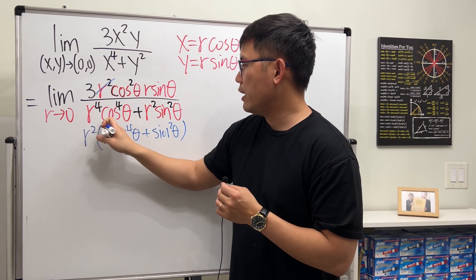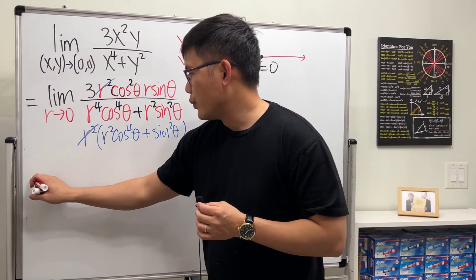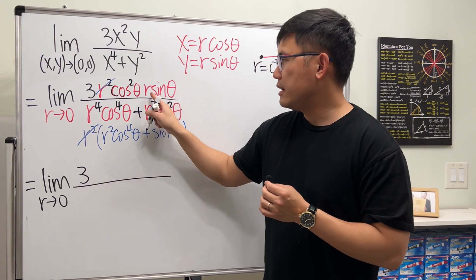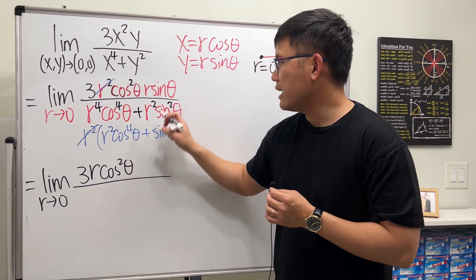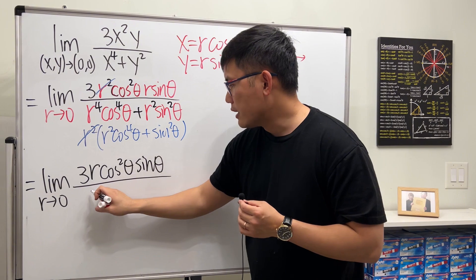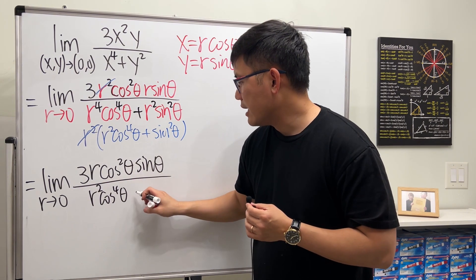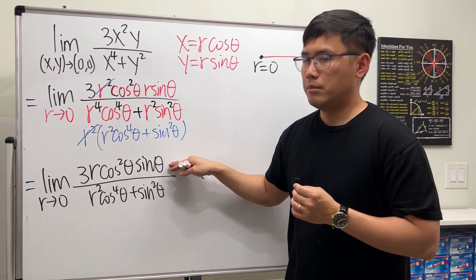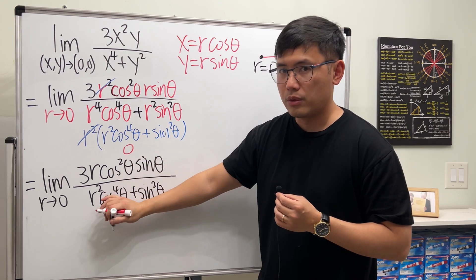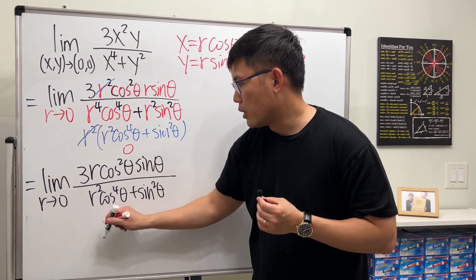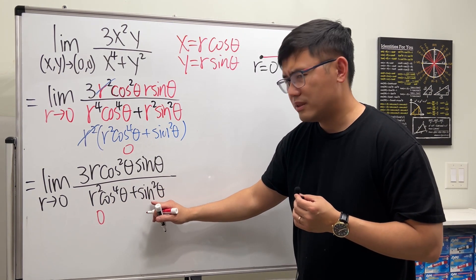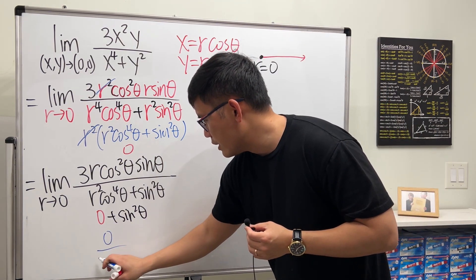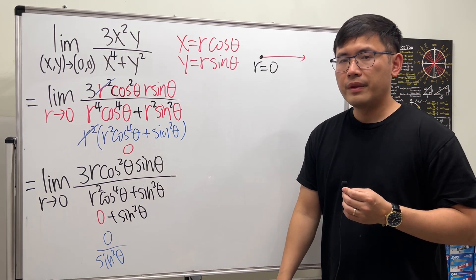After canceling r² from top and bottom, we get the limit as r → 0 of 3r·cos²θ·sinθ over r²cos⁴θ + sin²θ. If we plug r = 0 into the numerator we get zero, but the denominator becomes 0 + sin²θ = sin²θ. So we appear to get zero over sin²θ — but we cannot draw any conclusion here.